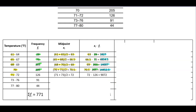The next two lower class limits are 71 and 73: 71 plus 73 divided by 2 gives us a midpoint of 72. Multiplying 72 by the frequency of 126 gives us 9072. The next two lower class limits are 73 and 77: 73 plus 77 divided by 2 gives us a midpoint of 75. Multiplying 75 by the frequency of 91 gives us 6825.